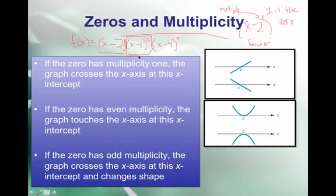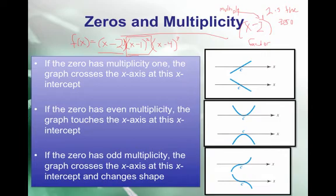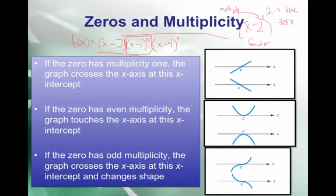If the zero has odd multiplicity, the graph crosses the x-axis and changes shape — it kind of looks like a sideways S. Note that it's different from multiplicity 1: it's not a straight crossing, it's a curved crossing where the concavity is changing. You may have learned this point as an inflection point or a point of diminishing returns. Going back to the example, x minus 4 cubed has odd multiplicity 3, so we cross at 4 with that curved shape.